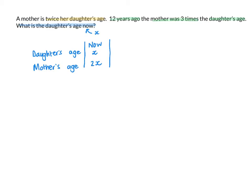The next time period I'm told about is twelve years ago. I'm going to ignore for now the information that the mother is three times the daughter's age and just look at the information I've been given. So if I take the daughter's age now, her age twelve years ago will be x minus twelve.